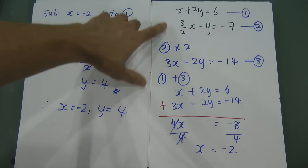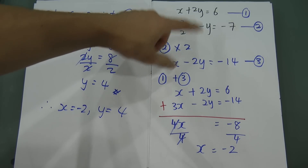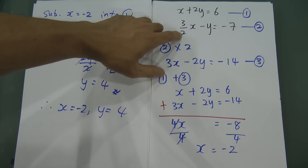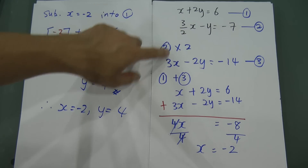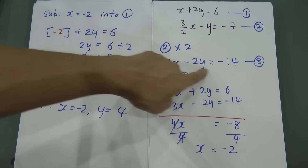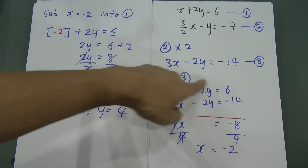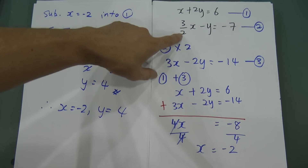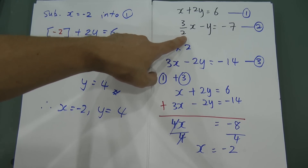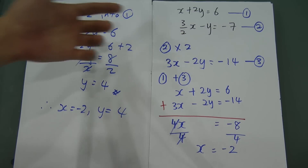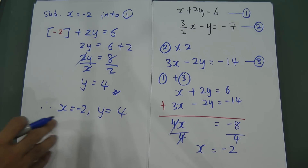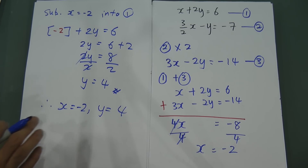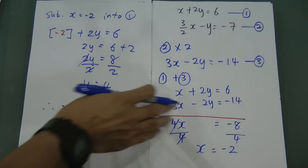When you see a fraction, don't panic. Try to multiply everything by the denominator — if the denominator is 2, multiply by 2; if it's 3, multiply by 3; if it's 6, multiply by 6. The fraction will then become a simple equation. Let's look at one more question which also has a fraction.